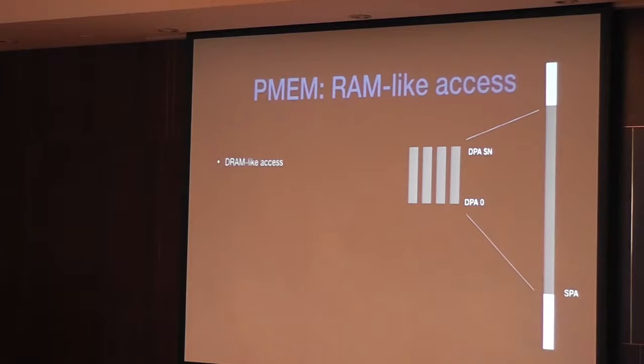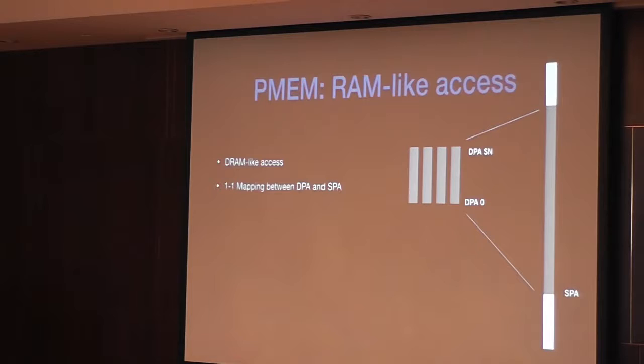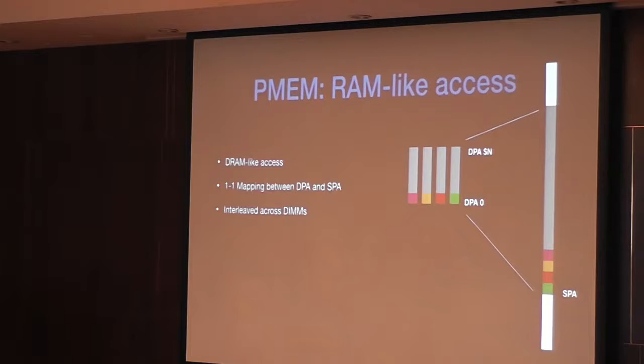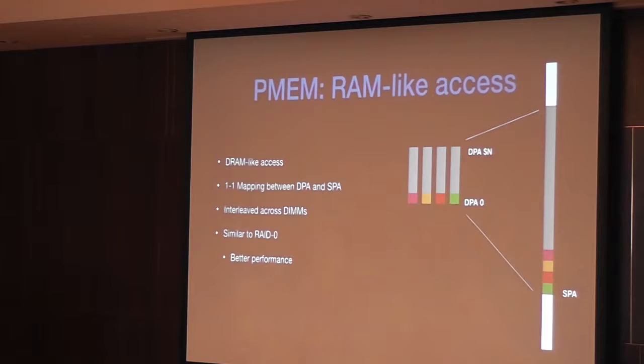The specification defines two different ways to have this mapping. The first type is called PMEM — RAM-like access. You have a one-to-one mapping between the DIMM physical addresses and the system physical addresses, and typically these mappings are interleaved. Going through system physical address space consecutively, one cache line might be from one DIMM, the next cache line from the next DIMM, and so on — like RAID 0 for DIMMs. The advantage is better performance when reading consecutively. However, it gives much worse reliability: if any one of those DIMMs fails, you basically lose all your data.